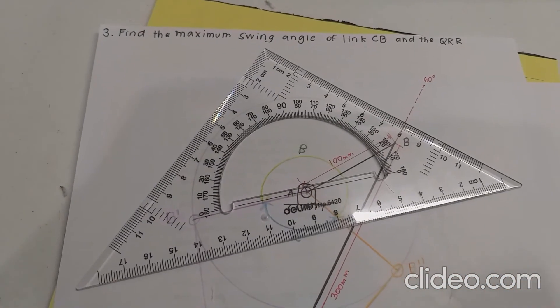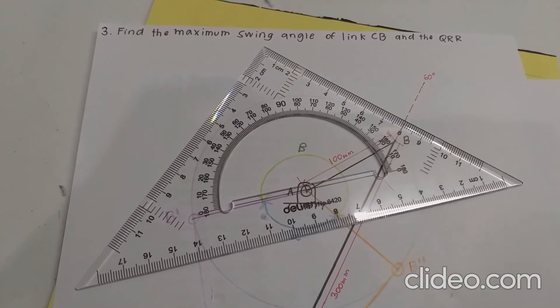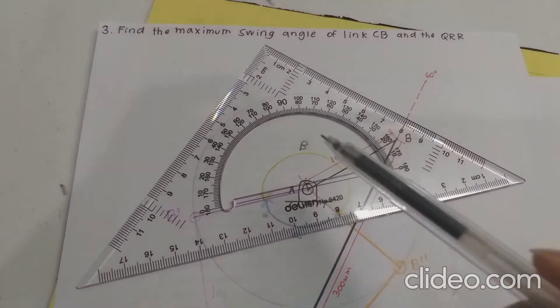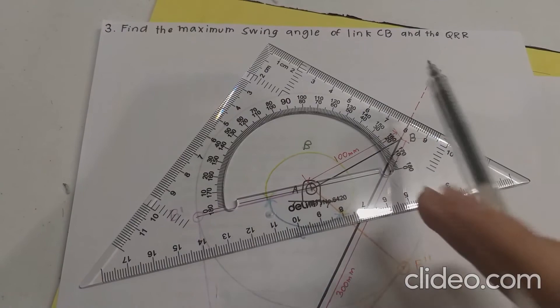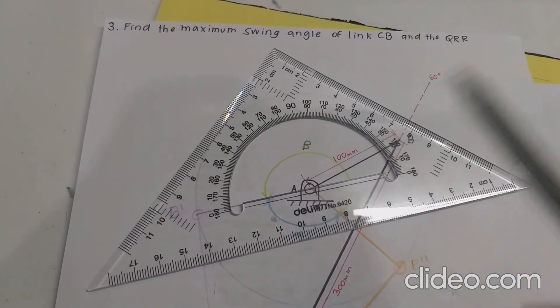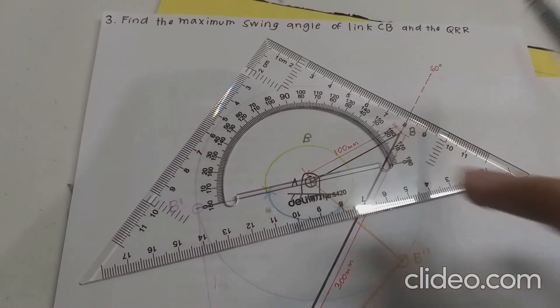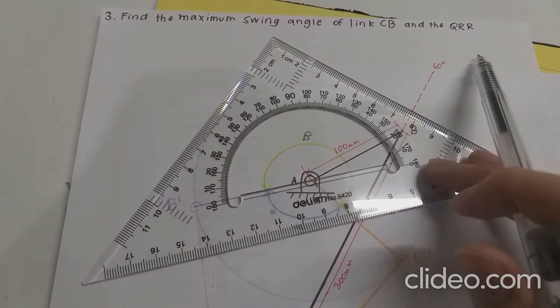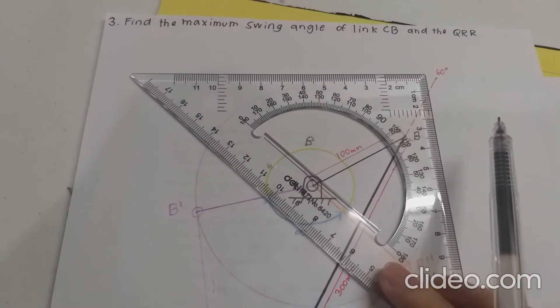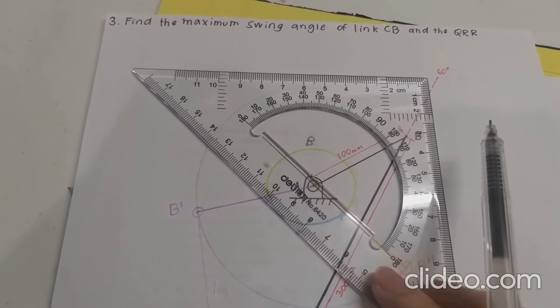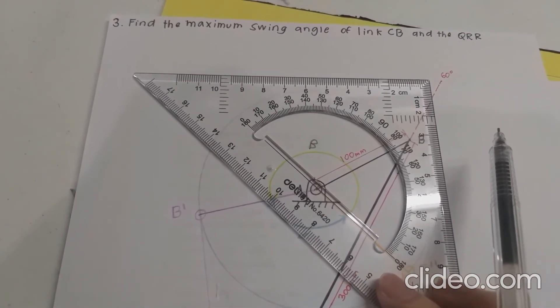And finally, we determine our quick return ratio, which is basically angle beta over angle alpha. So in measuring this, we get a full 180 degrees. We mark that here already. And then we measure the rest of the angle. And it's around 54 degrees.